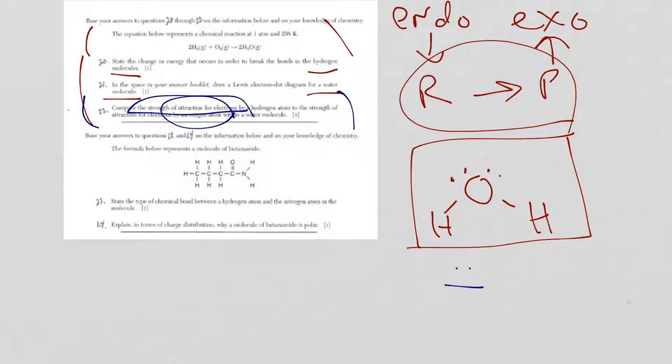Or you can look up the electronegativity values if you want and report those. The last two questions here. We have a molecule. And it's a structural formula. And you're asked to state the type of chemical bond between hydrogen and the nitrogen atom. So there it is. And the dash represents two electrons. These are two different nonmetals. It is definitely a covalent bond.